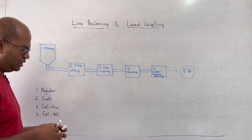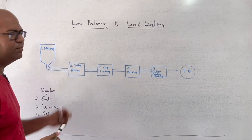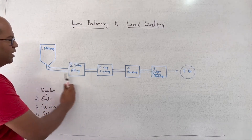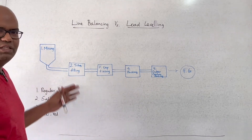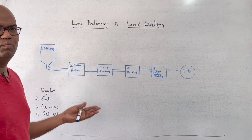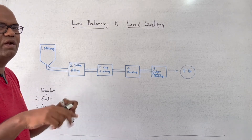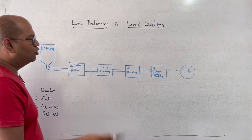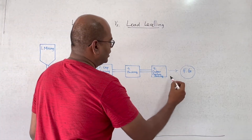Now we will talk about Line Balancing. What is line balancing? If all 5 processes have the same capacity and the same cycle time, then the output will be the same across all processes.